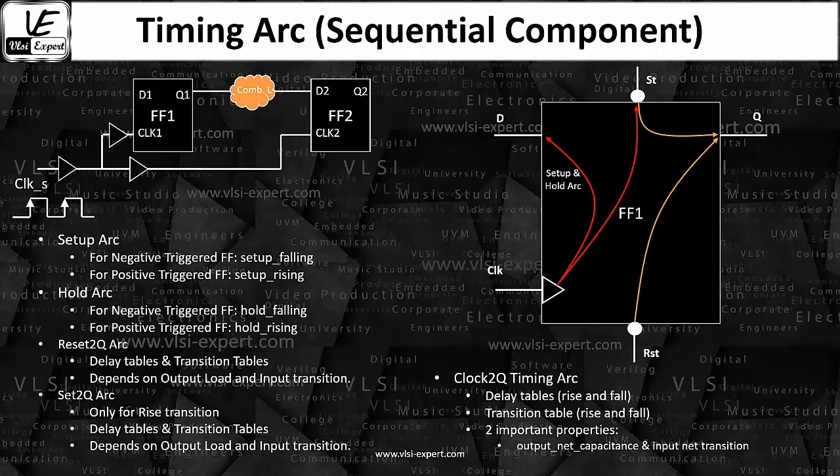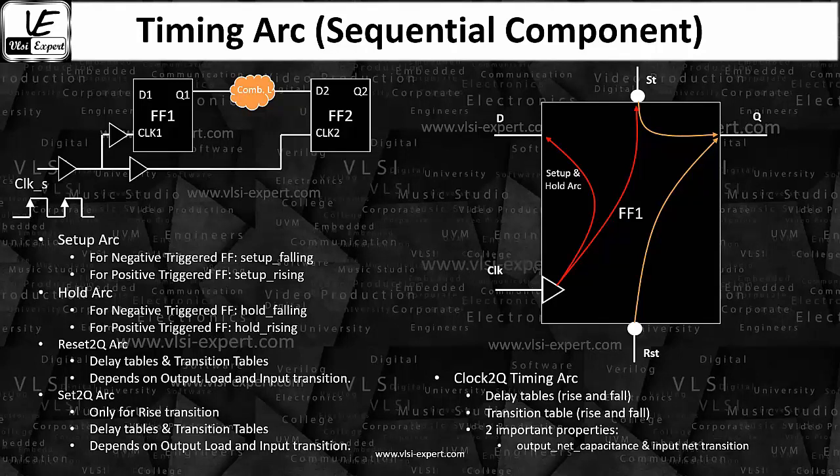So the timing arc, the timing information which is important, that is with respect to the clock or with respect to the set or the reset pin. Set and reset are inputs, D is also input, clock is also input, Q is output, and if there is Q bar then Q bar is also output.